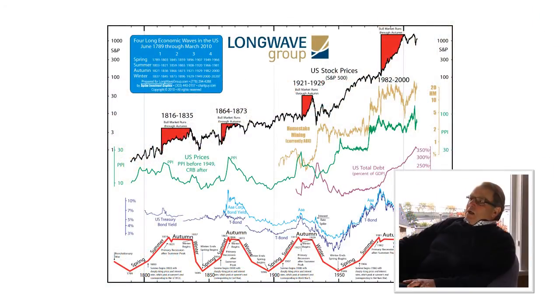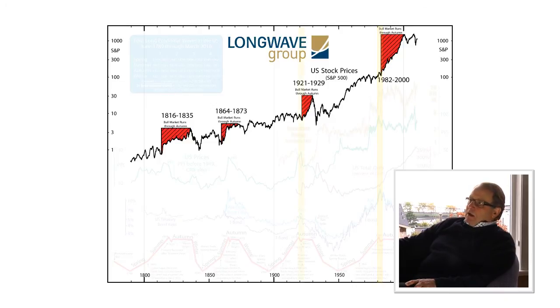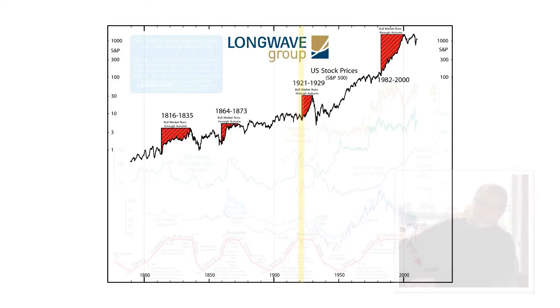The fourth indication that we're going into this big autumn bull market is the recession. Many of you might remember the 1981-82 recession, which at the time was called the biggest recession since the Great Depression. Similarly, between 1920 and 1921, there was a very severe recession. So those four indications — a bear market in stocks, a recession, a peak in interest rates, and a peak in prices — are all indicators that you are now going into autumn and the biggest bull market in stocks of your lifetime.